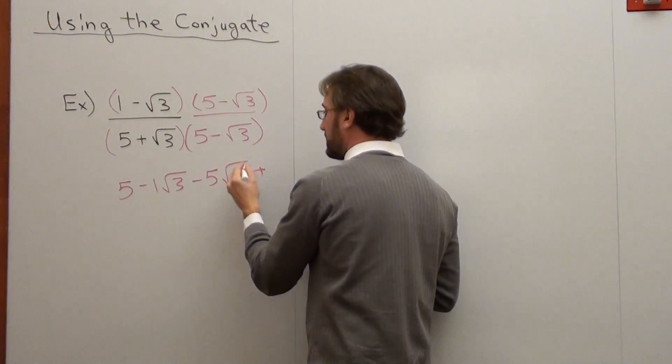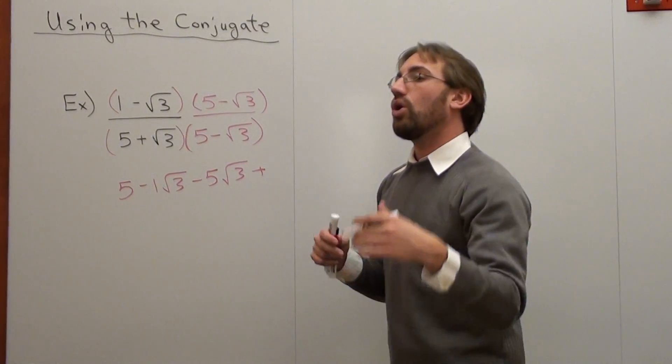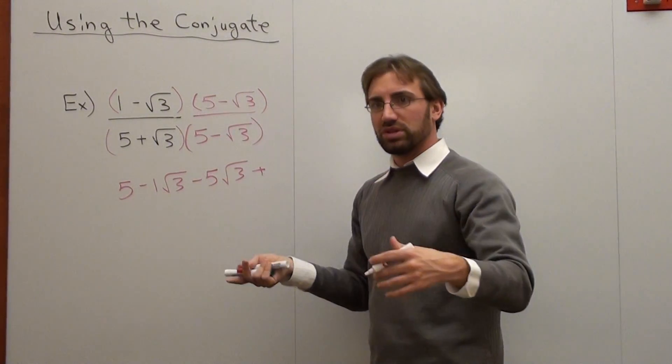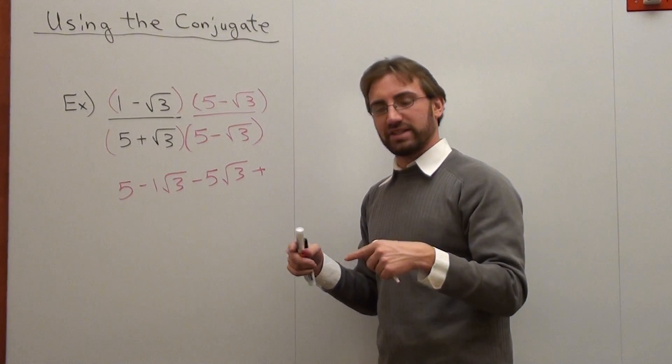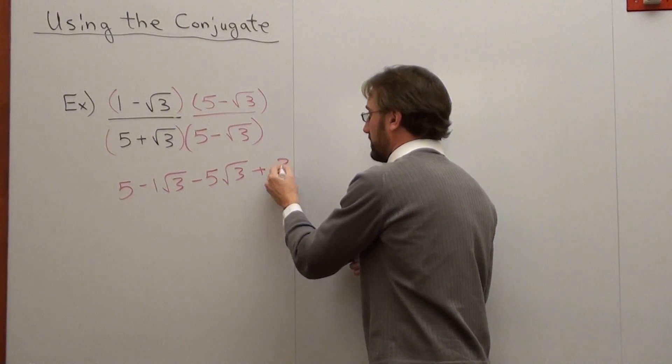So, negative times a negative is positive. Square root 3 times square root 3 is square root 9. Or, if you're multiplying the same root inside each other, and it's the same radical sign as well, basically it's just the whole number inside, 3.